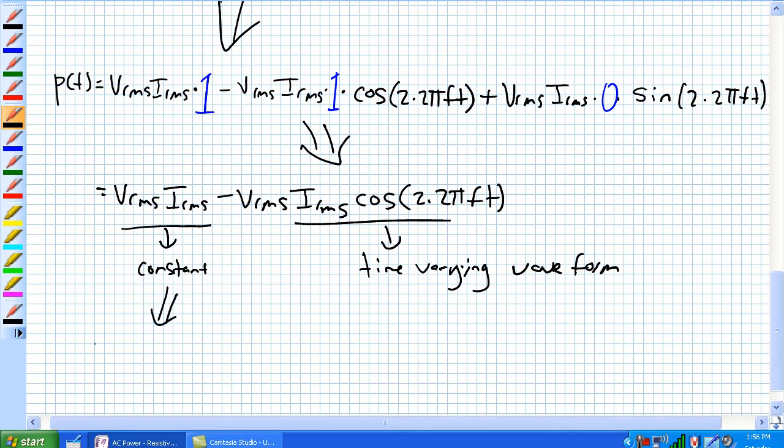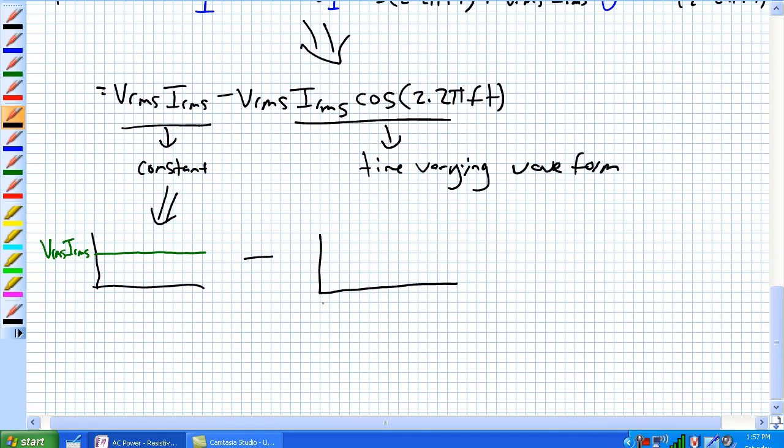We can go ahead and draw those guys where the constant looks like this. And what's the value of it? It's VRMS, IRMS and it stays that way the whole time. What does this guy look like, the time varying portion of it? Well, it's a minus, so we're going to put the minus right here for now. So it's this constant minus the time variant waveform which I'm going to describe right here.